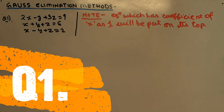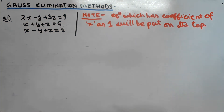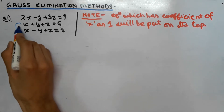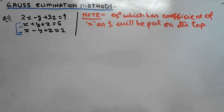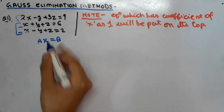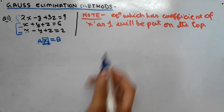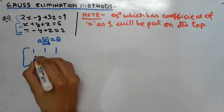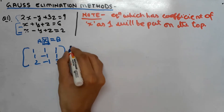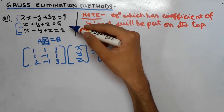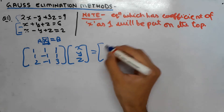Now we will do a couple of questions so the working rule becomes clear. In question number 1, we have a system of linear equations. First we ensure the equation with coefficient of x equal to 1 is placed on top — here two equations have coefficient 1 for x, so either can go first. We then form matrix A as [1, 1, 1; 1, -1, 1; 2, -1, 3], matrix x as [x, y, z], and matrix b as [6, 2, 9].